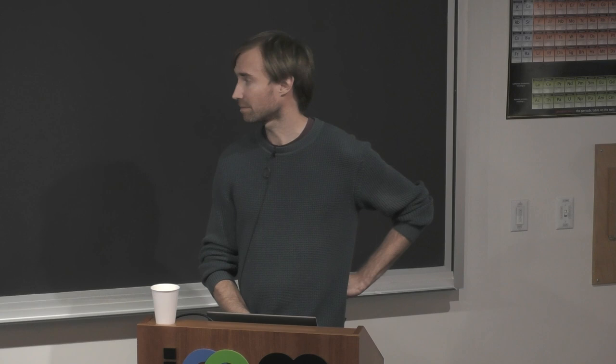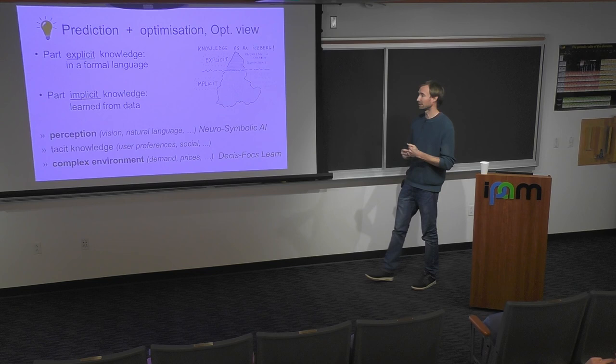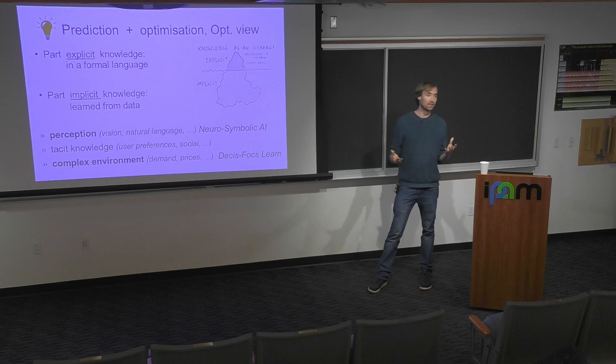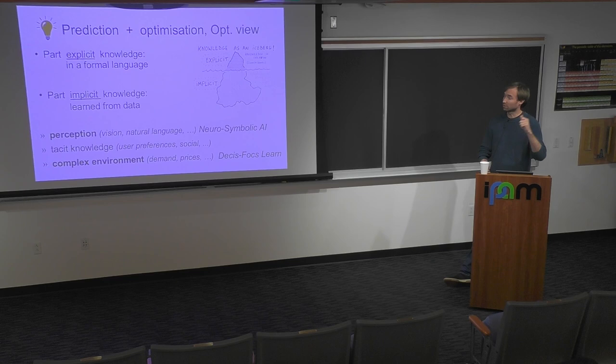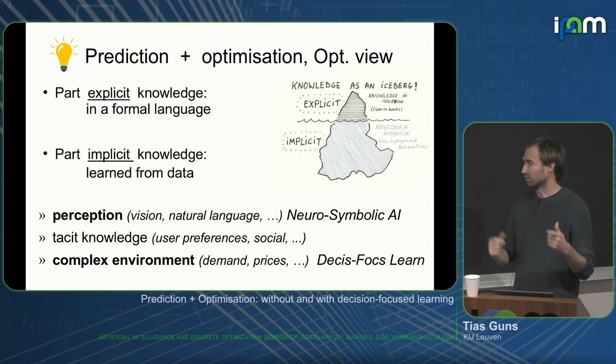Another exciting area I won't talk about is when you're dealing with real people that have user preferences and social norms to be taken into account when solving combinatorial optimization problems — think about nurse rostering, problems where this has a lot of impact on workers and their preferences are not explicitly written down in rules. This combination of learning to predict preferences and optimizing over them is interesting, but I will not cover that today.